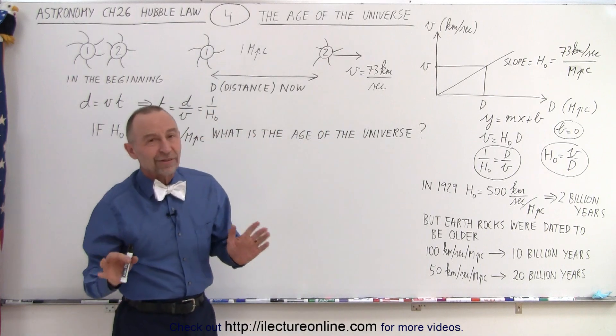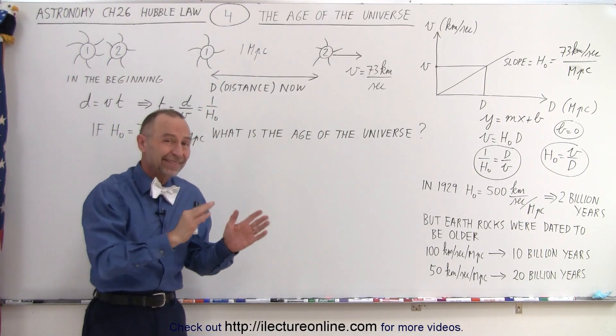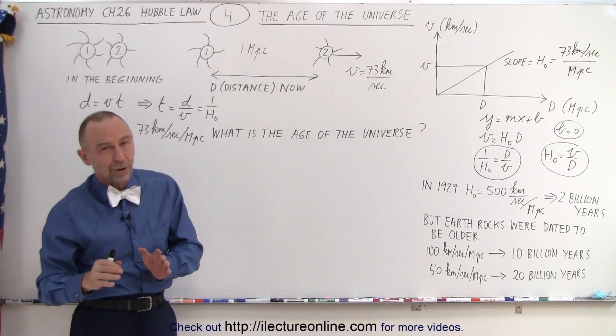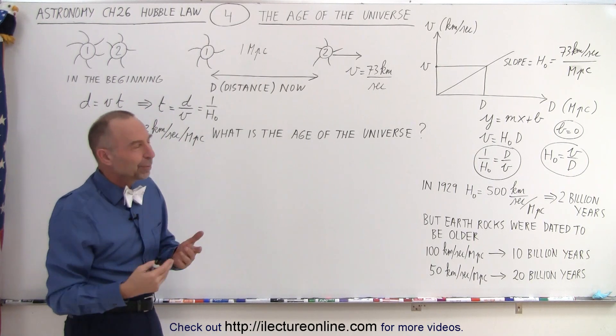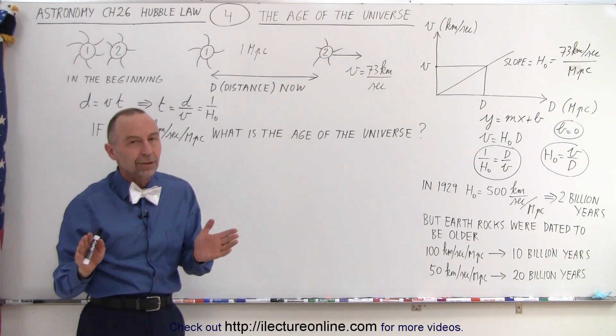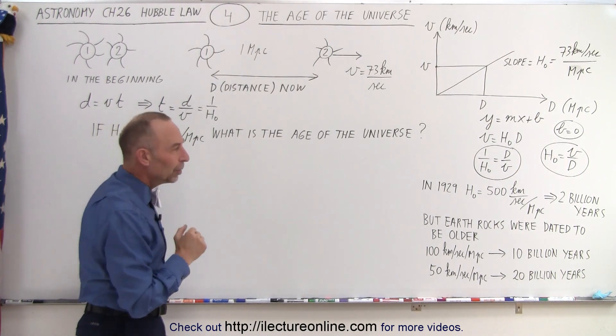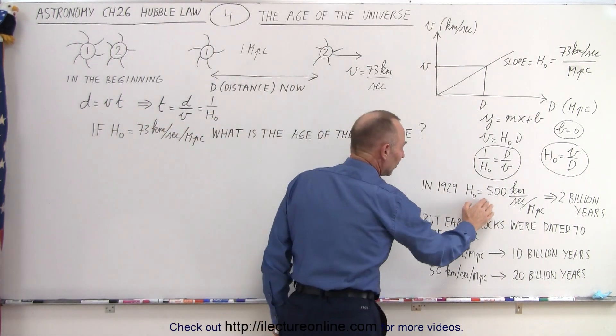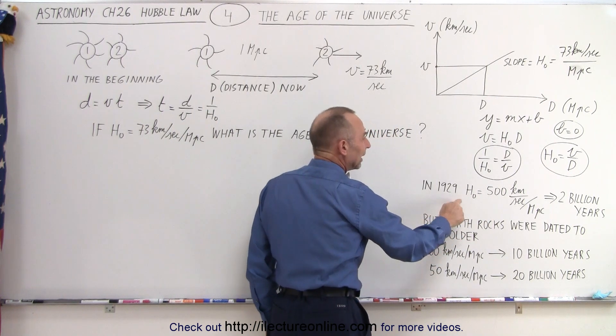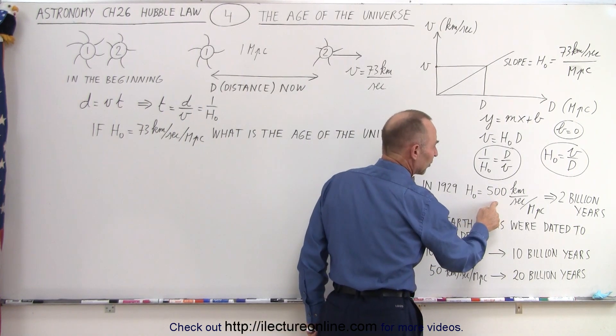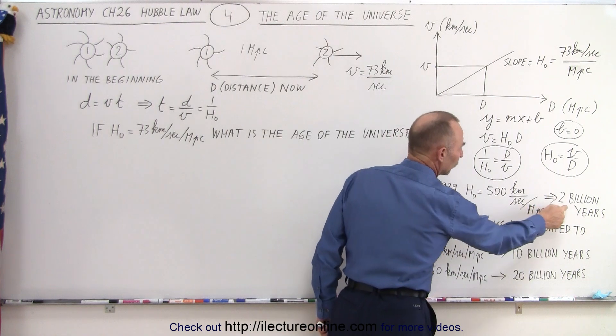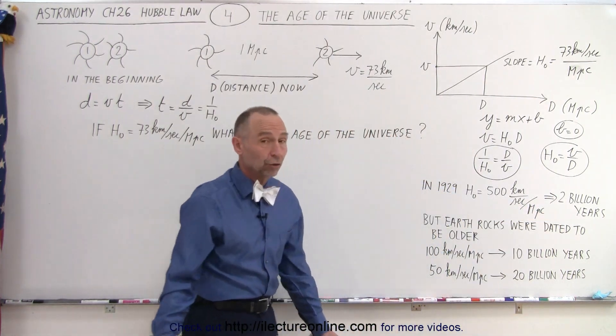Of course, we still don't know exactly what the number is. It varies anywhere from about 67 to about 74, although lately 73 has been kind of the accepted value, but it's still going to change in the future.